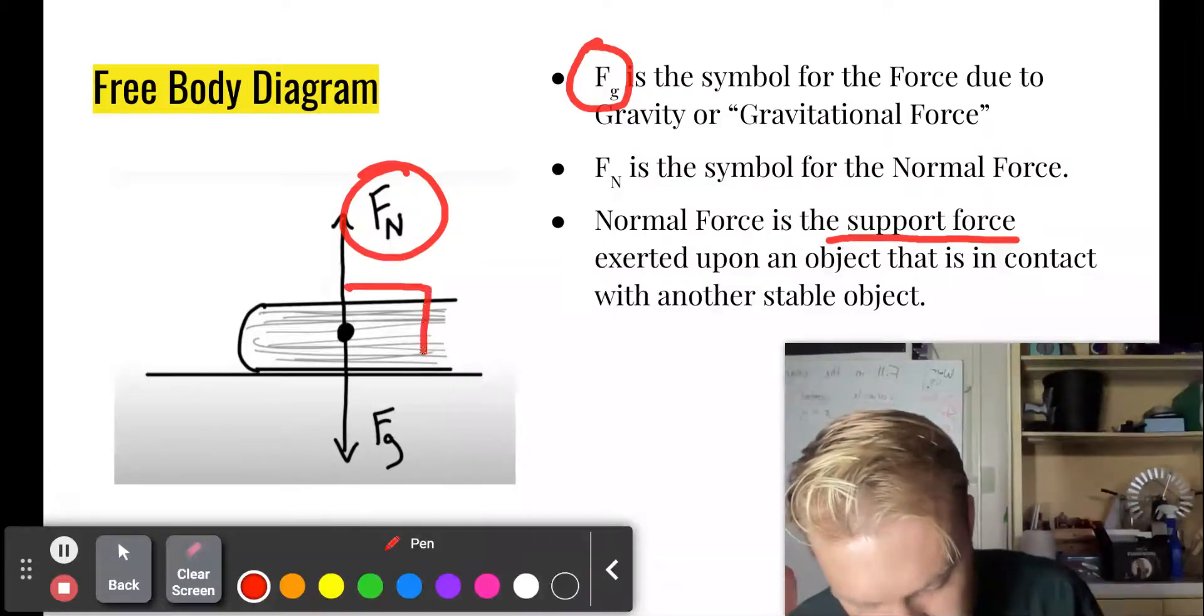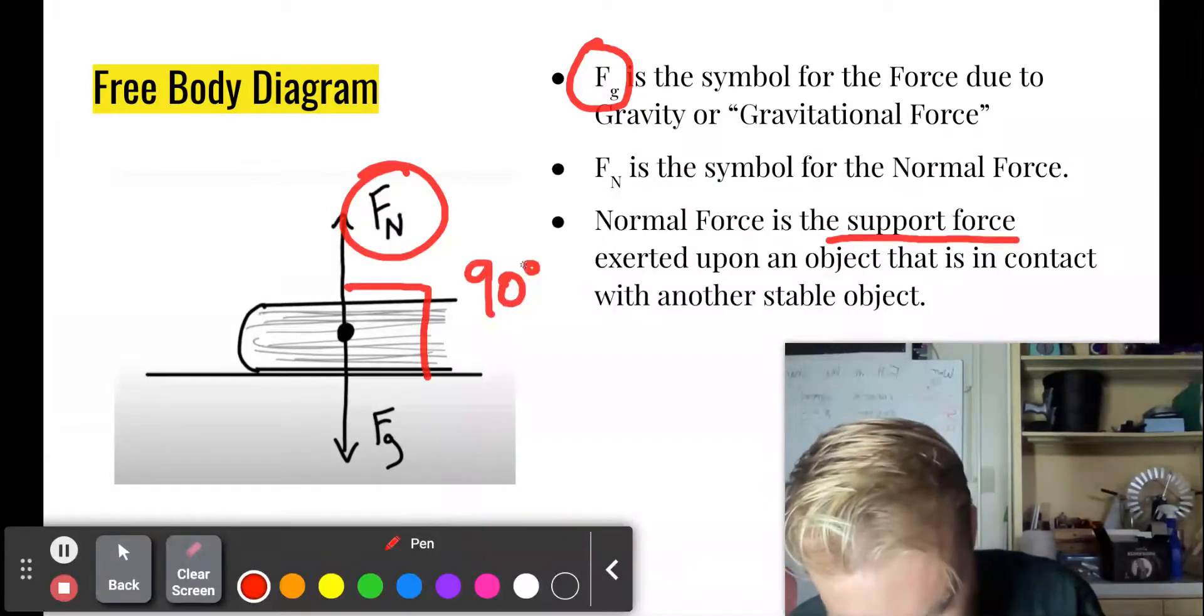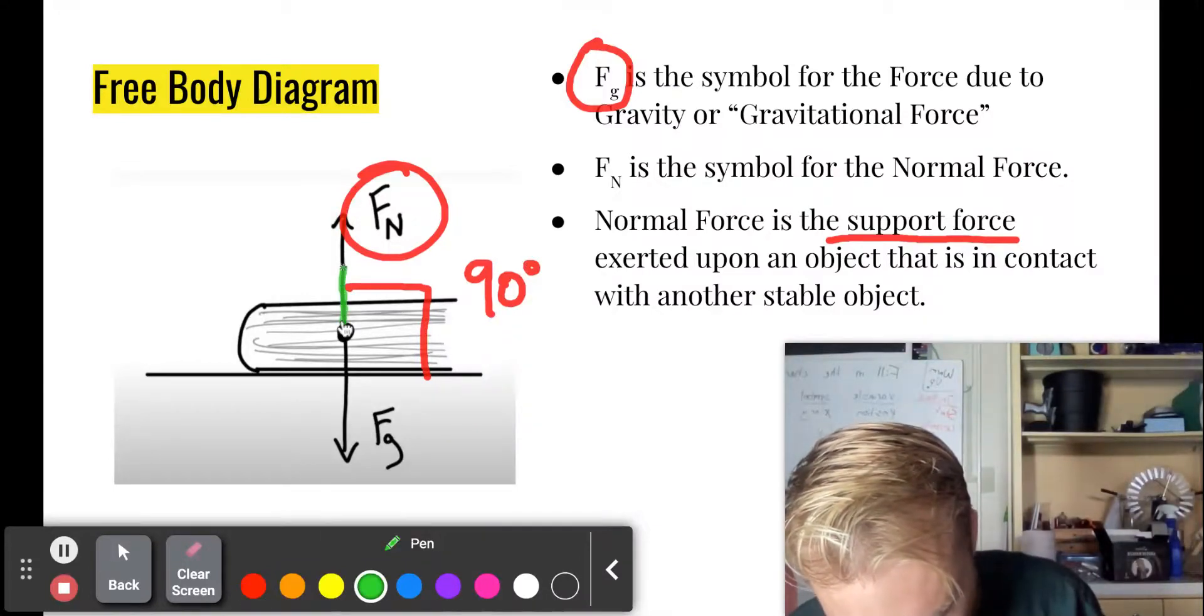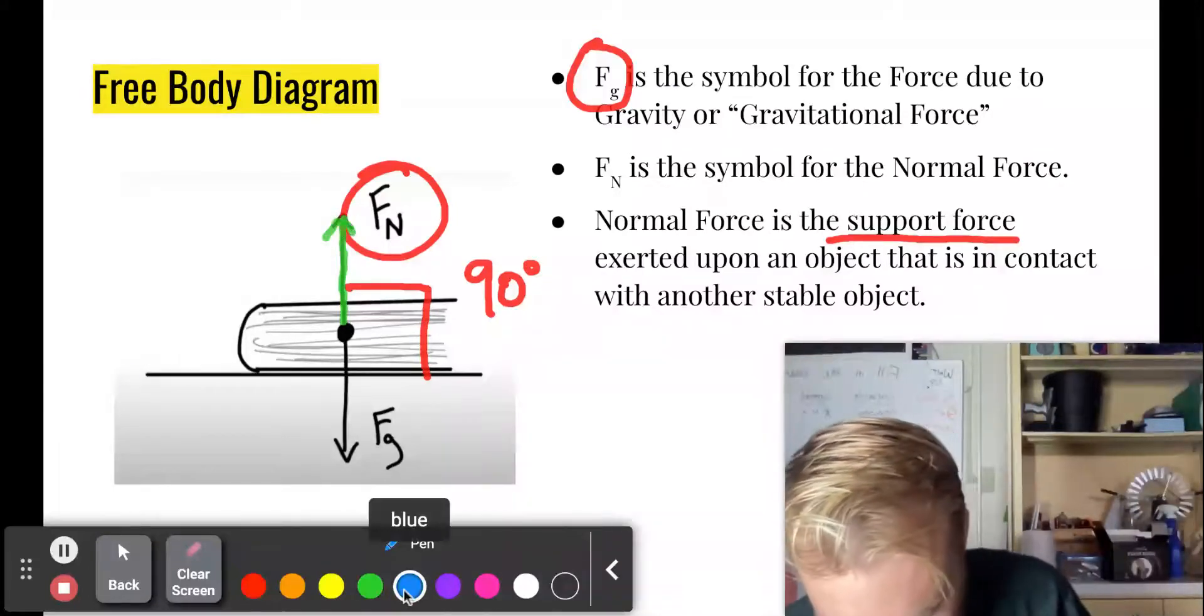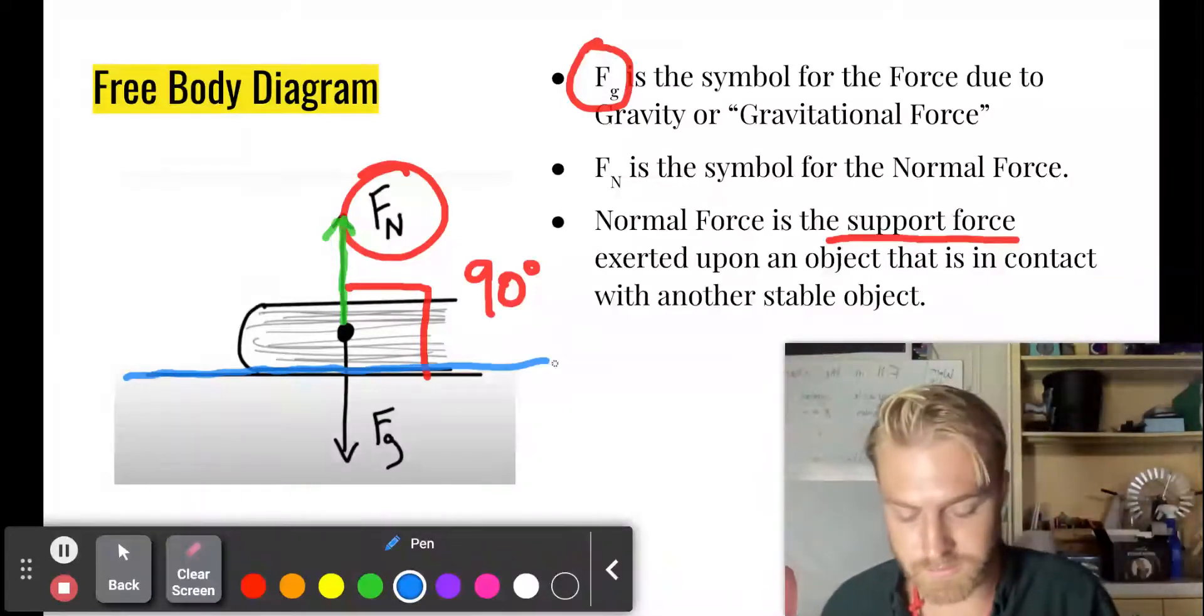And normal just means perpendicular. So that means there's a 90 degree angle between the normal force, let me draw in green, and the surface, which is the table. You see that 90 degree angle. Normal just means perpendicular.